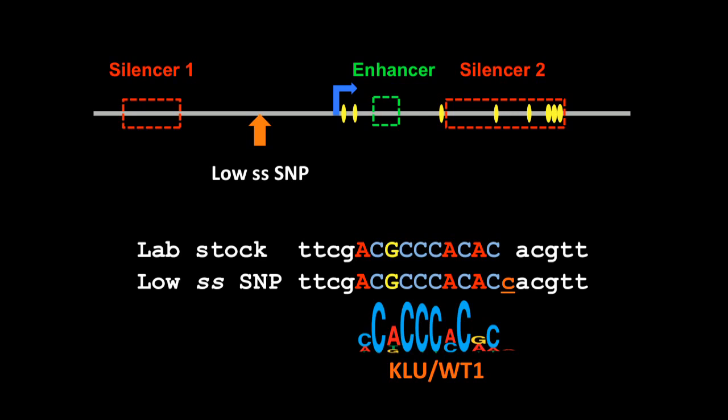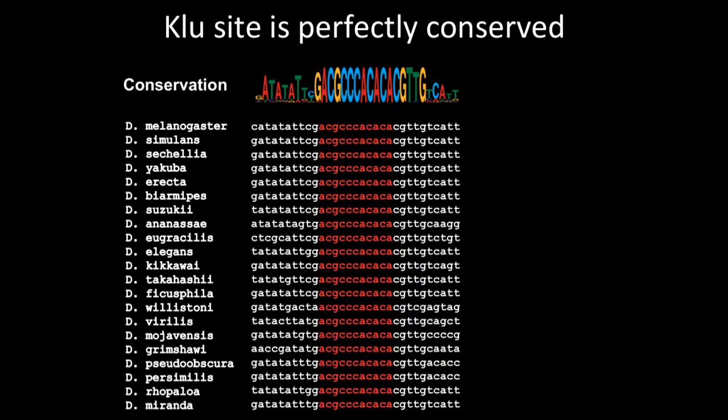When we looked into it further, however, we found that it overlaps with a predicted binding site for clumpus, of which the human homolog is Wilms tumor suppressor 1.